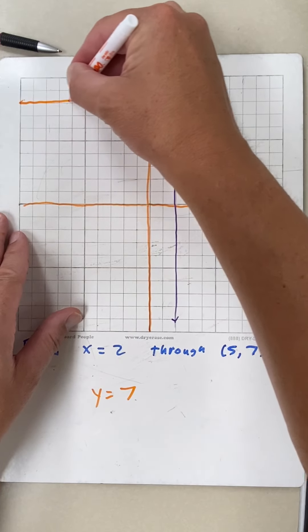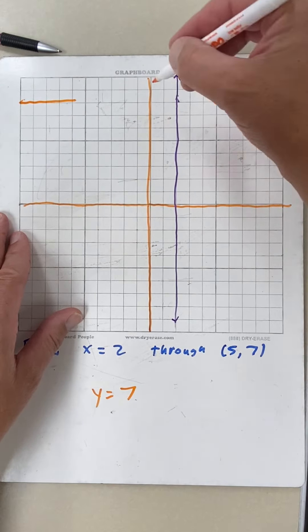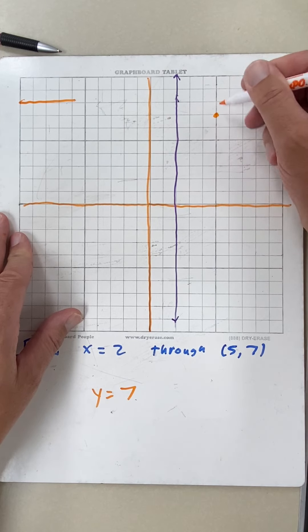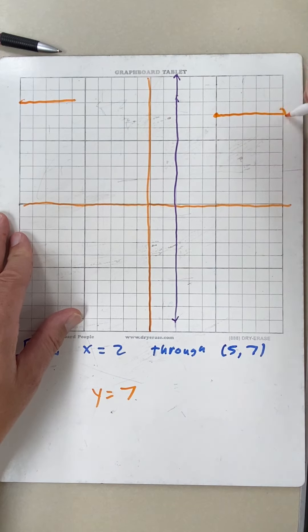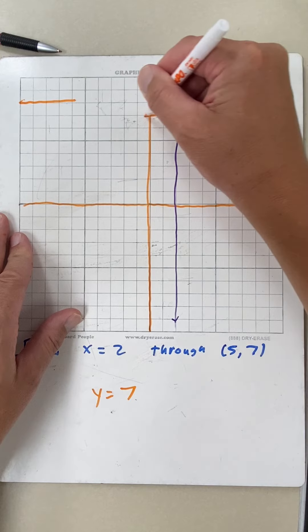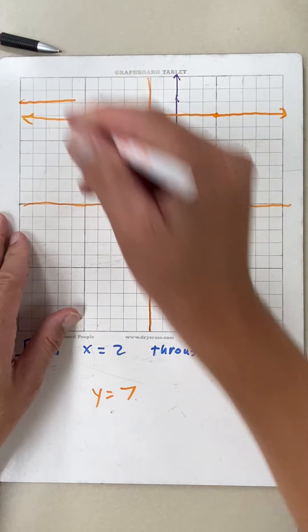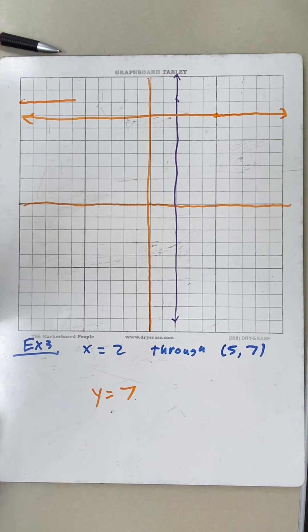So y equals 7. Boom. Oh, I'm on the wrong spot here. 5, 7's are right here. So y equals 7 is the line that goes right through there. All right, it's that easy.